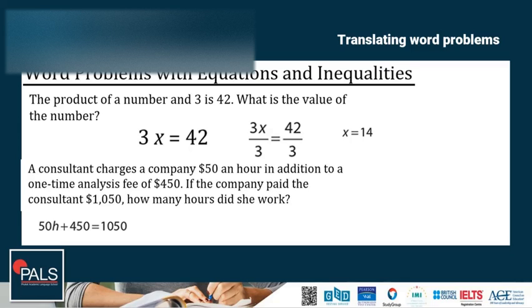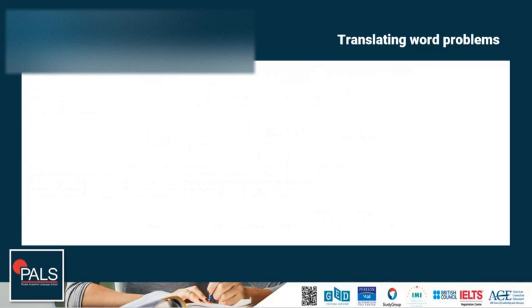So we have the equation 50h plus 450 is equal to 1,050. Solving the equation by undoing 1,050 first, subtracting both sides by 450, gives us 50h is equal to 600. Then undoing 50h by dividing both sides by 50 gives us 12 for the value of h. It means the consultant worked for 12 hours.